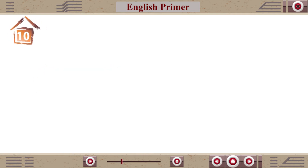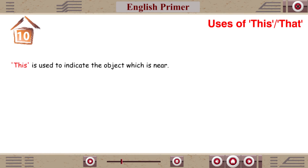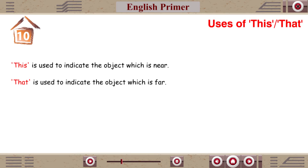Chapter 10: Uses of This and That. This is used to indicate an object that is near. That is used to indicate an object which is far.